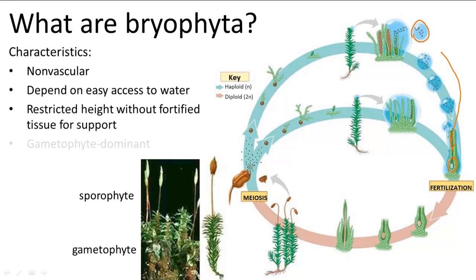Shown here is the life cycle of a moss, and if you look at the diagram here and the picture, you can see that the sporophyte generation of the moss is on the upper half and the lower half is the gametophyte generation, so clearly the sporophyte and gametophyte generations live together. In fact, the sporophyte generation actually depends on the gametophyte generation for nutrients because only the gametophyte generation can photosynthesize.